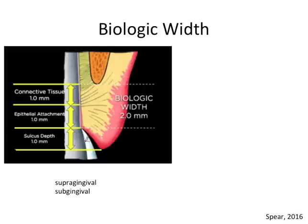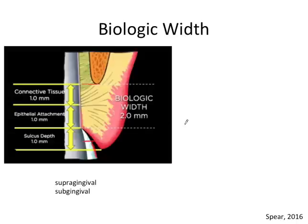Say we come somewhere around here with our crown margin — these are all averages and every patient is different. If on average we go 0.5 millimeters below the gingiva, and since the sulcus is usually not less than one millimeter, you're generally pretty safe. This allows a distance of at least 2.5 millimeters from the bone level to the restorative margin of our crown.